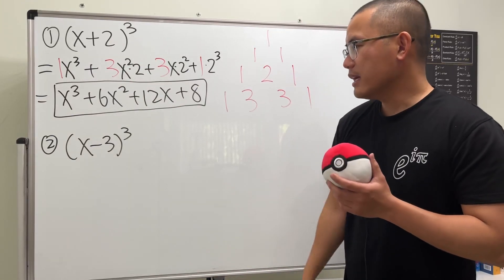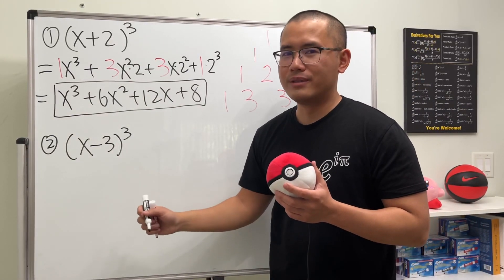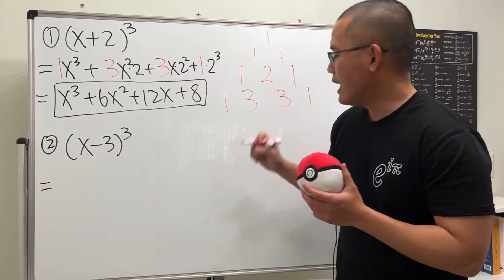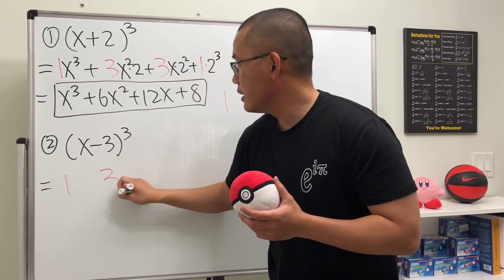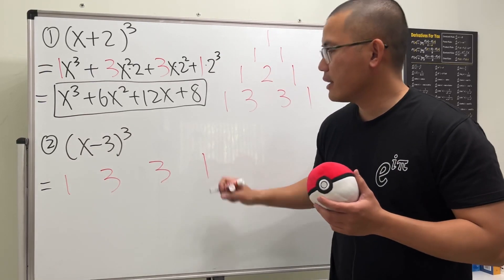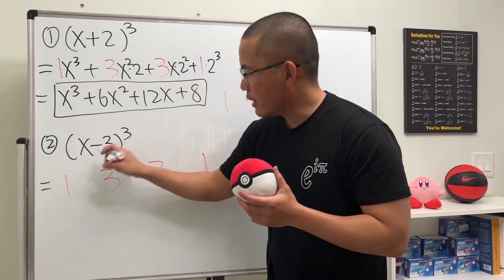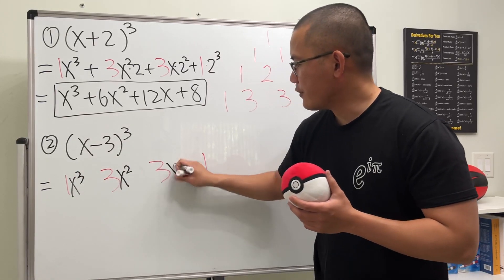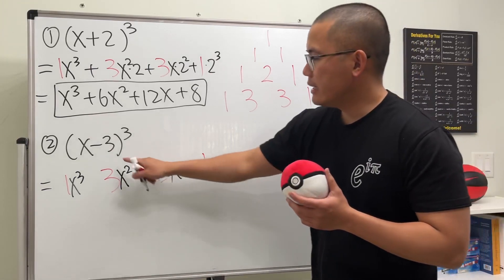Now for the second one we have (x - 3) to the third power. The steps are the same, let's go ahead and just make that work. We have 1, 3, 3, 1. Then we start with x to the third power, x square, x to the first, and no x.